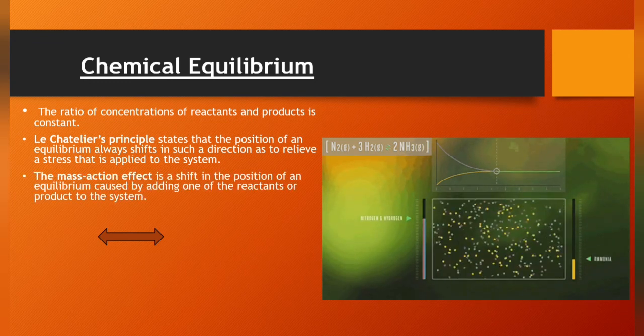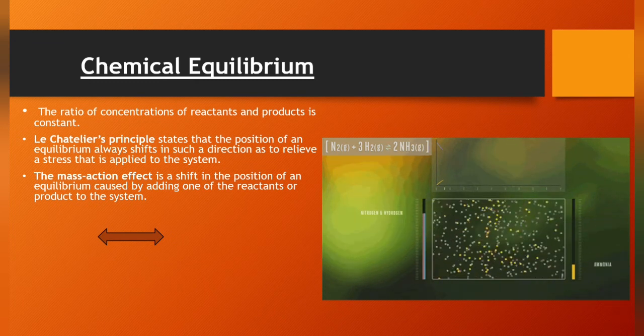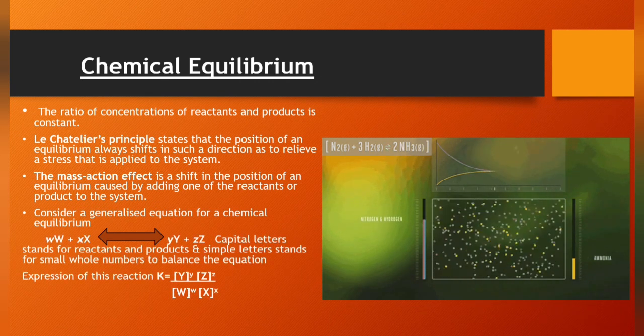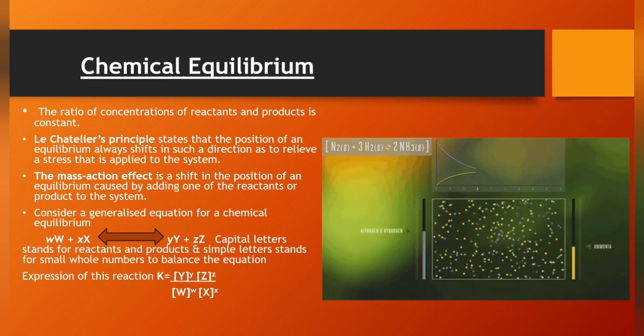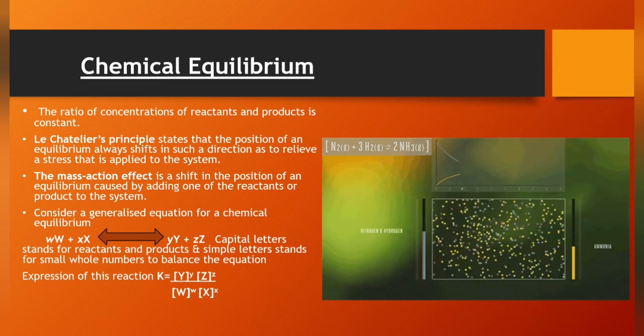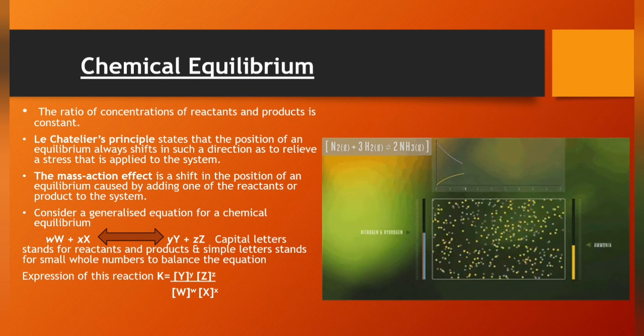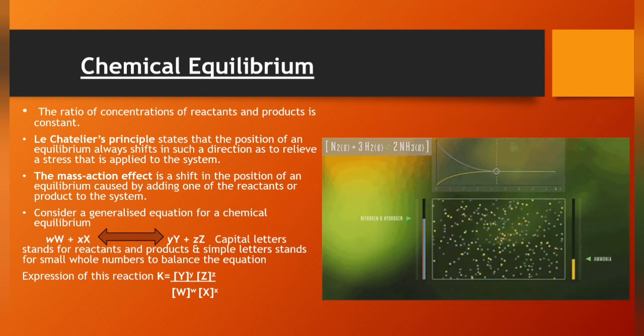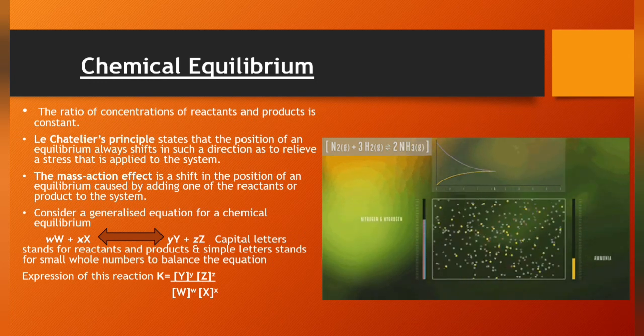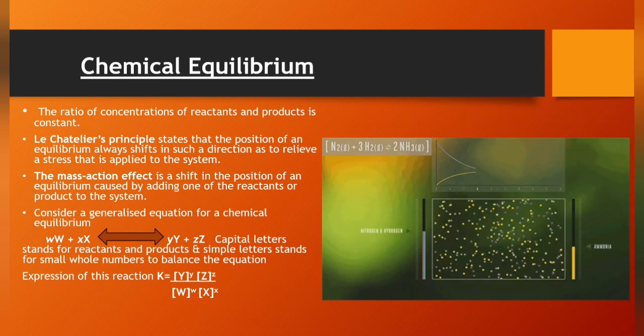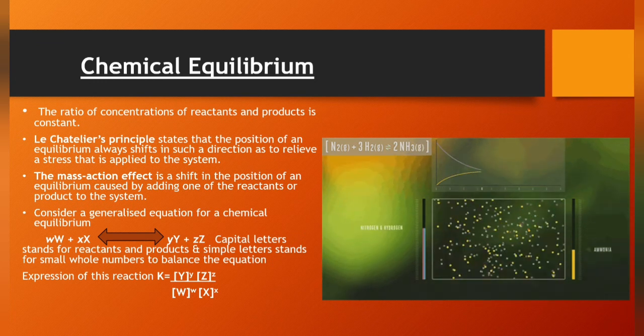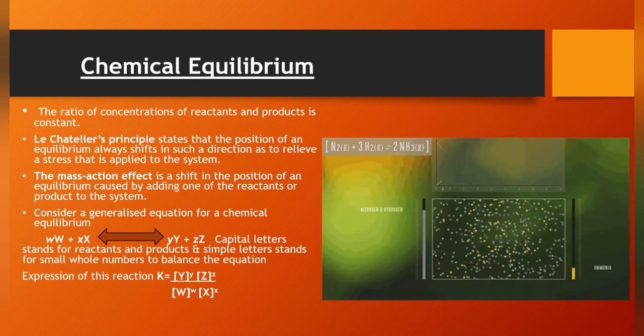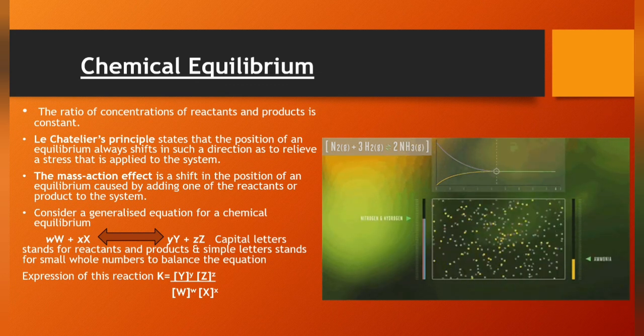Consider a generalized equation for chemical equilibrium: w times W plus x times X equilibrium mark y times Y plus z times Z. Capital letters stand for reactants and products, simple letters stand for small whole numbers to balance the equation. Expression of this reaction: Equilibrium constant equals concentration of products Y to the power y and Z to the power z divided by concentration of reactants W to the power w and X to the power x.